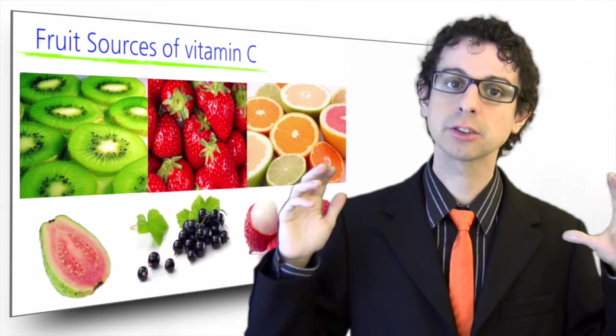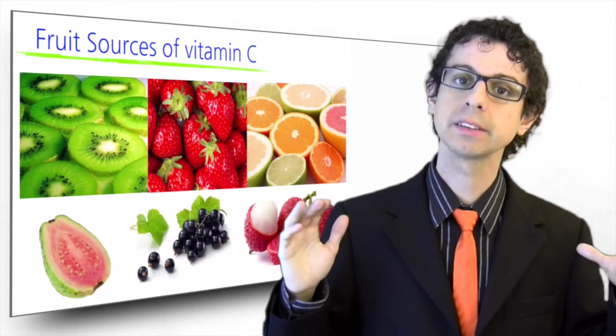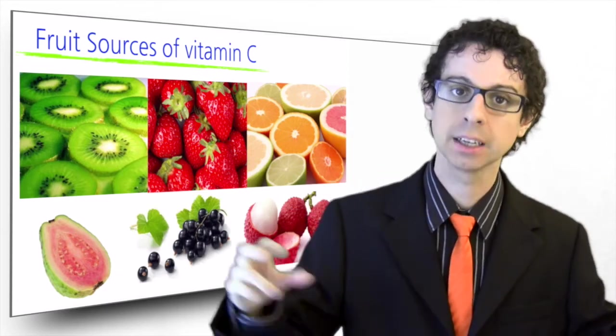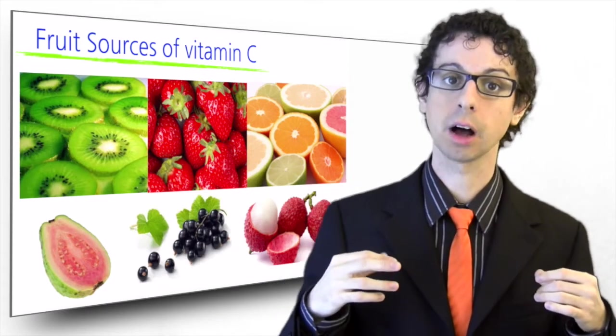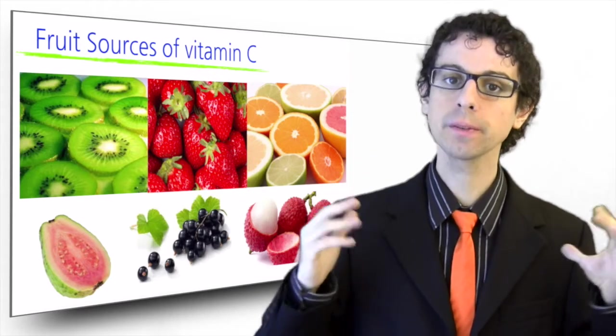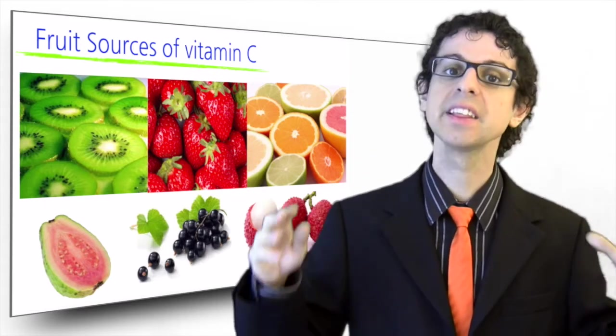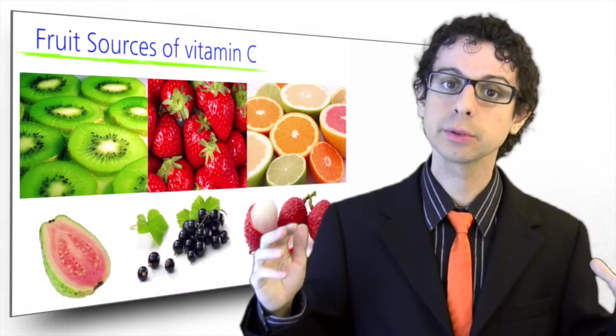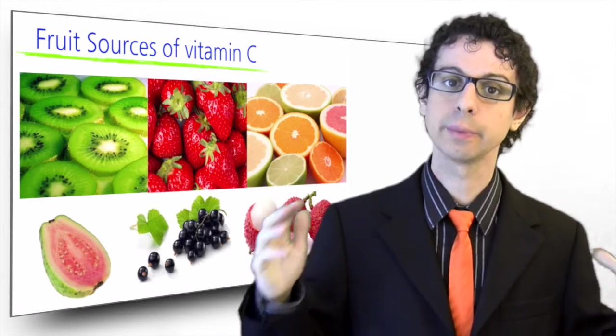In pre-packaged pasteurized OJ, some vitamin C has likely been added back to make up for processing losses. There are, however, some fruits that have even more vitamin C than oranges, and these are strawberries, kiwifruit, lychee, guava, and blackcurrant.